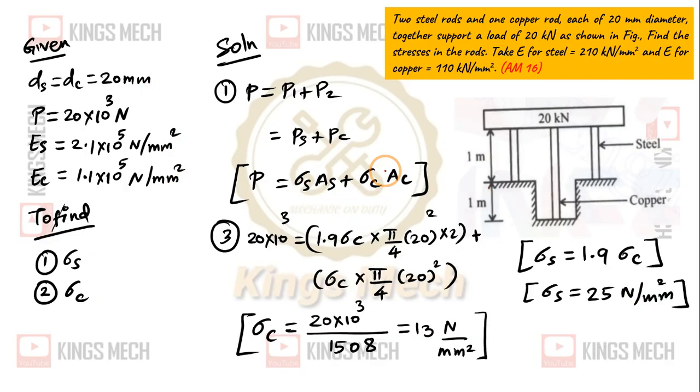So, how we are substituting? P value is 20 into 10 power 3. Sigma s into area equals 1.9 sigma c.